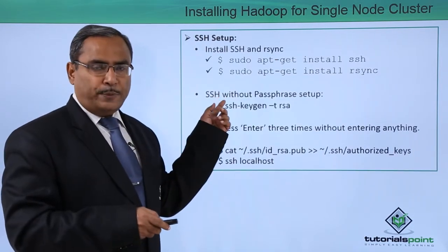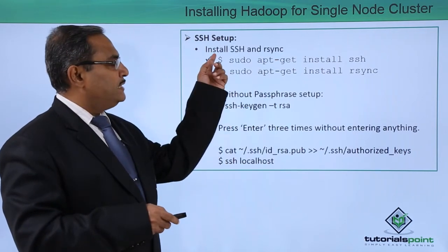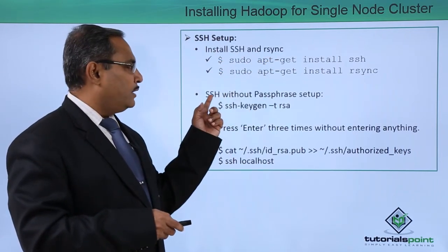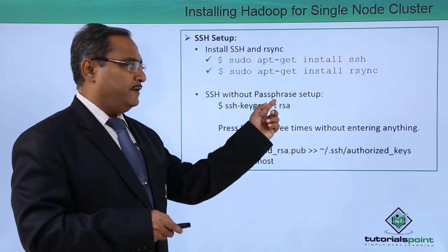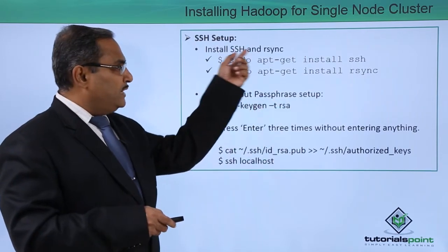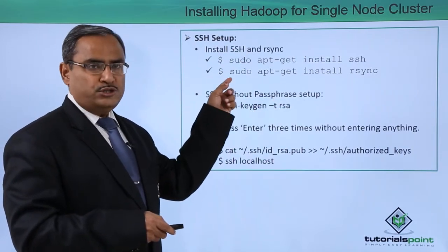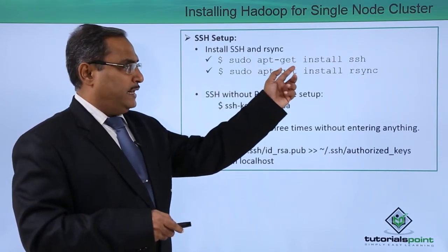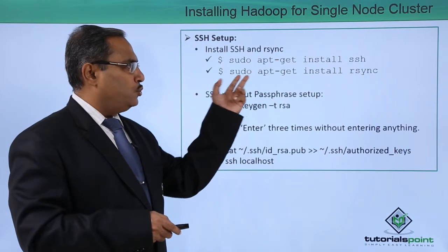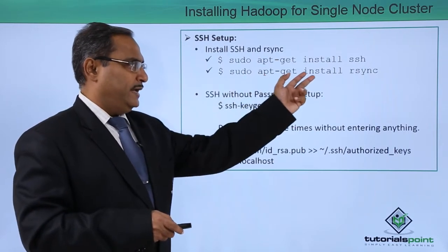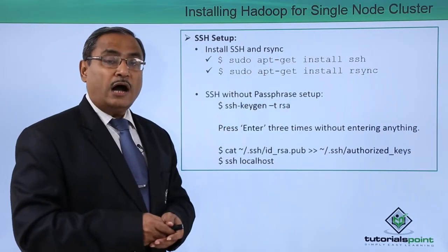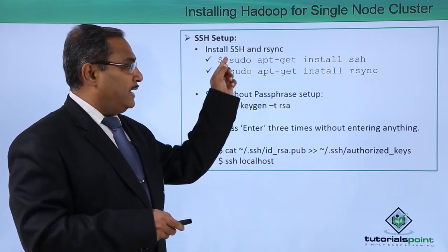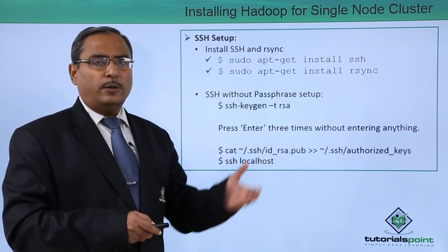Now let us go step by step for the installation of Hadoop for a single node cluster. There are two operations to be done. First, install SSH and RSync, then set up SSH without passphrase. To install SSH and RSync, execute these two commands: sudo apt-get install SSH, then sudo apt-get install RSync. These two commands are to be executed from the dollar prompt.